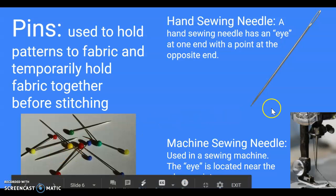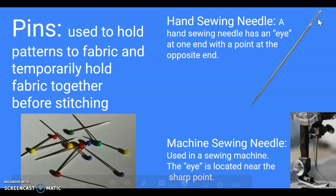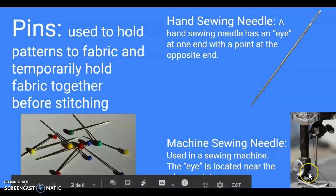On the other hand, we have needles. Needles have an eye or an opening where the thread is going to go through. This one is an example of a hand sewing needle. Here you can see a machine sewing needle where the eye with the thread opening is down towards the tip.